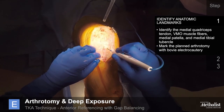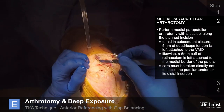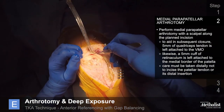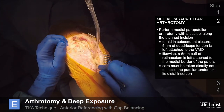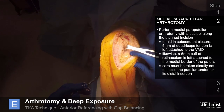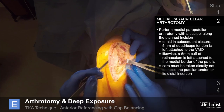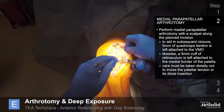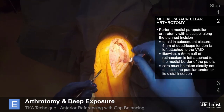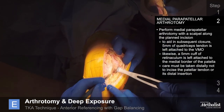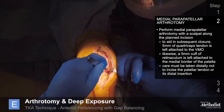Place a finger at the lateral soft spot and palpate the medial patella and the border of the patellar tendon to define the arthrotomy. Mark the planned arthrotomy with bovie electrocautery, then perform the medial peripatellar arthrotomy with a scalpel along the planned incision. To aid in subsequent closure, 5 mm of quadriceps tendon is left attached to the VMO. Likewise, a 5 mm cuff of retinaculum is left attached to the medial border of the patella. Care must be taken distally not to incise the patellar tendon or its distal insertion.